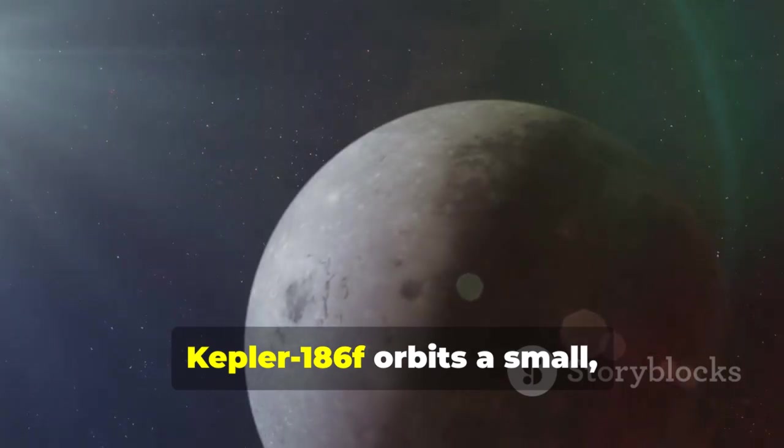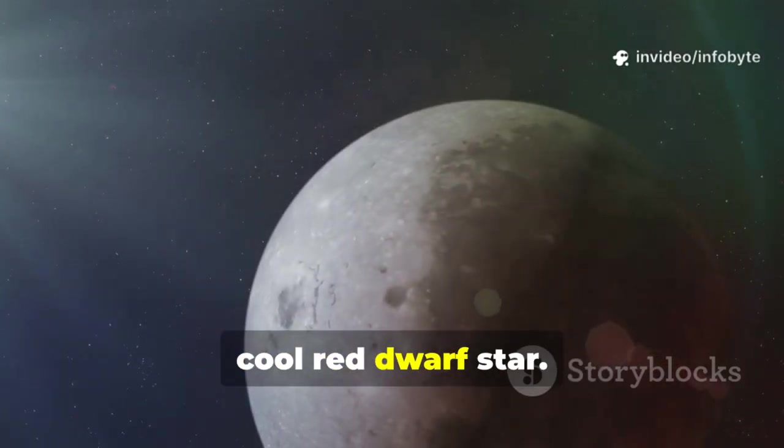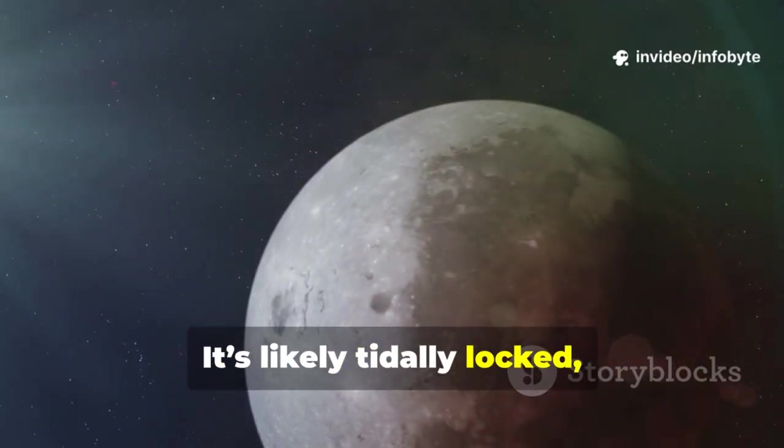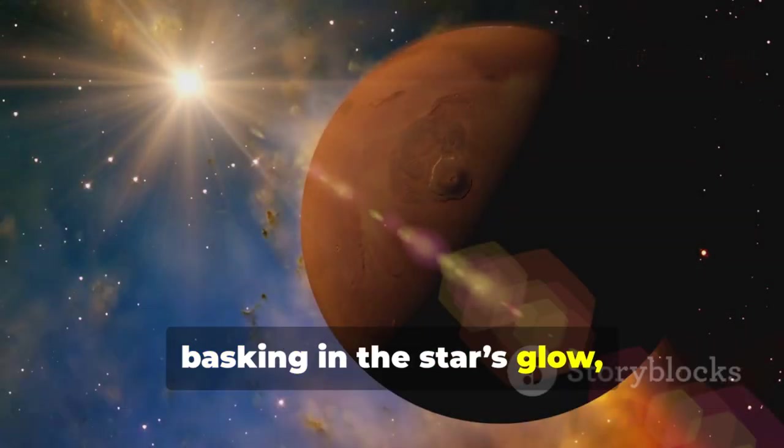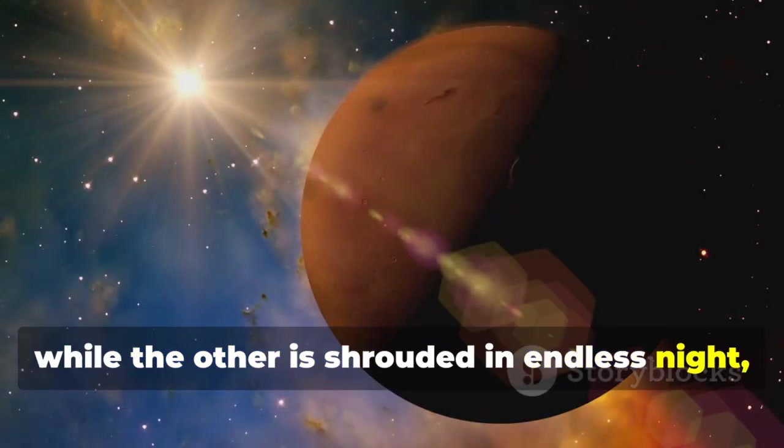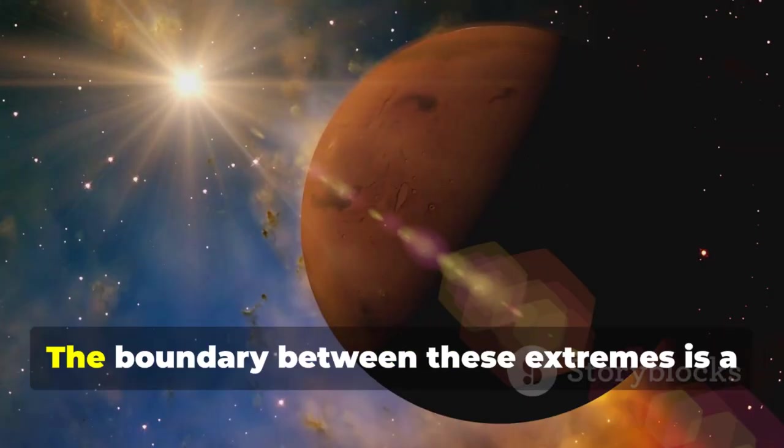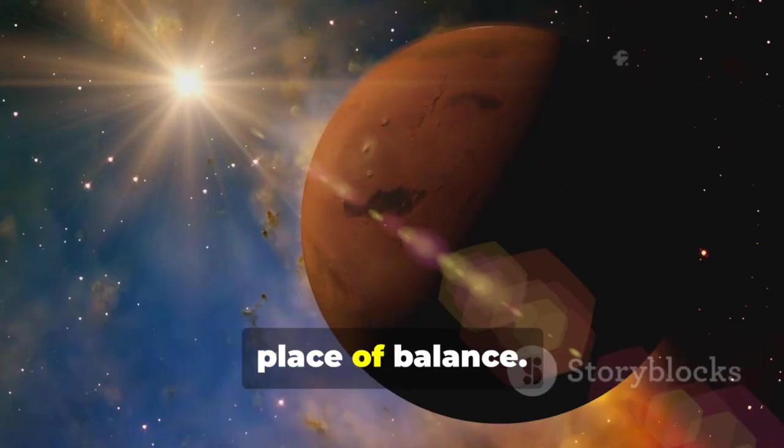Kepler 186f orbits a small cool red dwarf star. It's likely tidally locked, meaning one hemisphere faces perpetual daylight, basking in the star's glow, while the other is shrouded in endless night, frozen and dark.